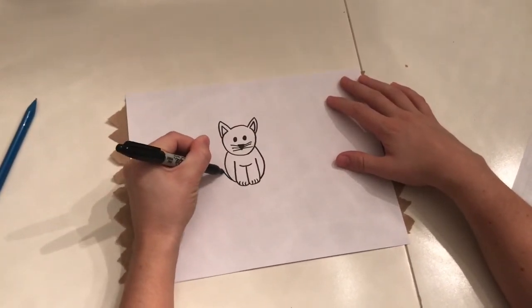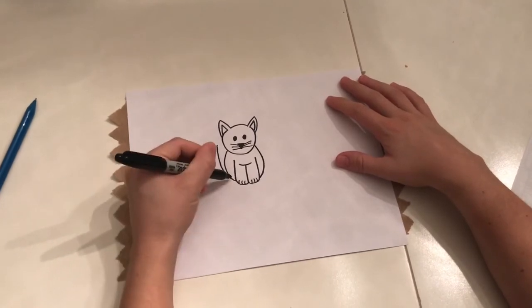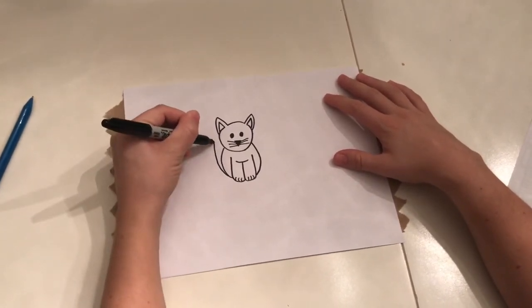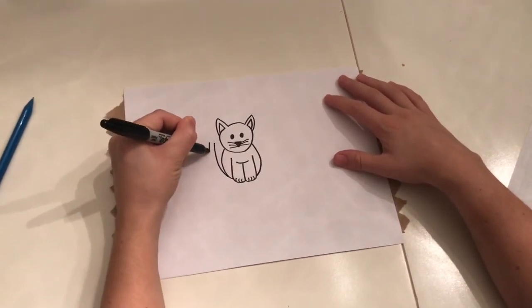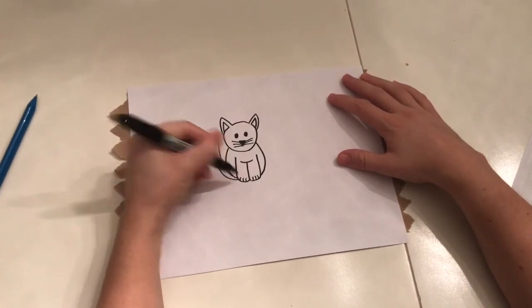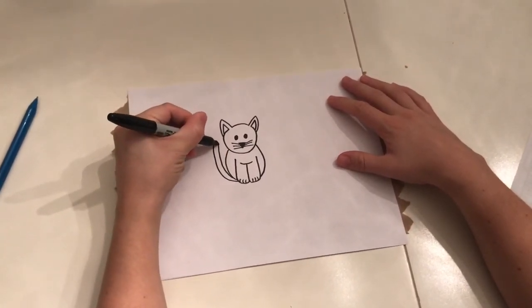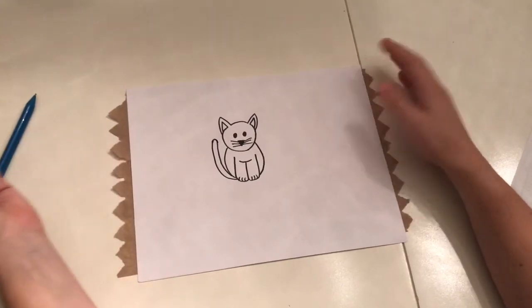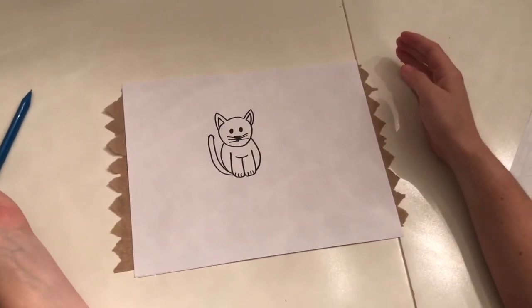But the basic shape is just a straight, well a curvy line. And then you curve it the same on the other side. And connect them at the top with a little round rainbow line. Ta-da! There's our cute little kitten.